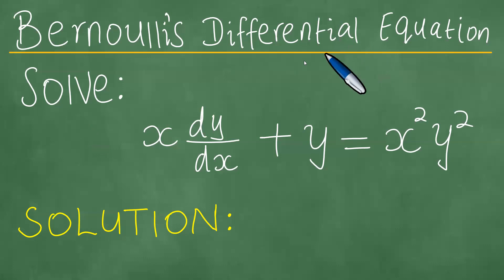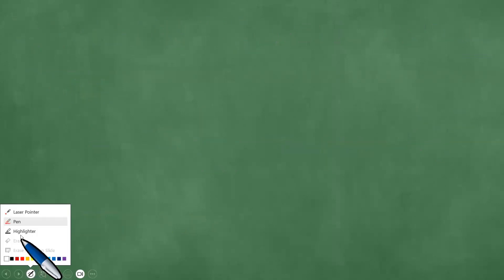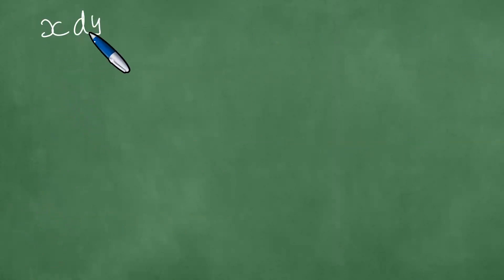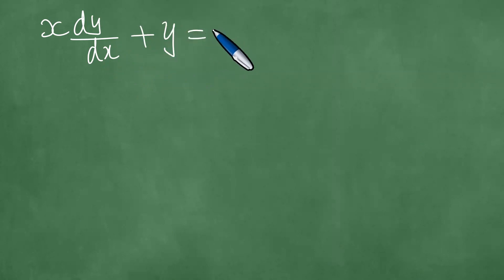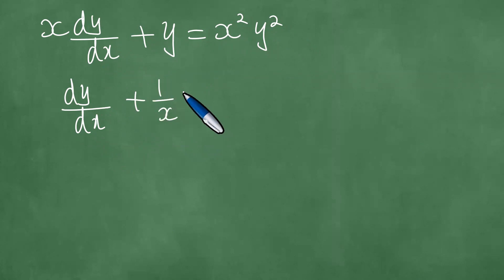We have a Bernoulli's differential equation, and we need to solve x dy/dx plus y equals x squared y squared. We prepare a solution to this problem in a step-by-step manner. We note that we have been given x dy/dx plus y, which equals x squared y squared. We divide through by x, getting dy/dx plus 1 over x times y, which equals x y squared.